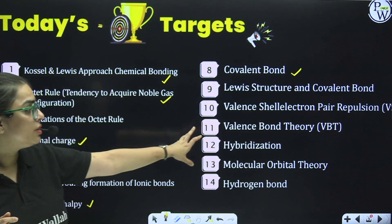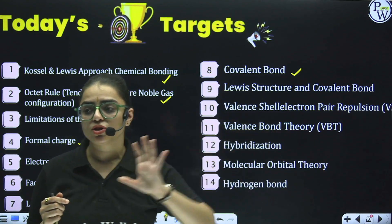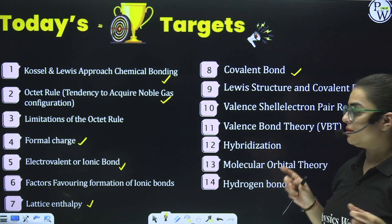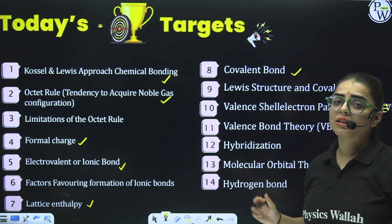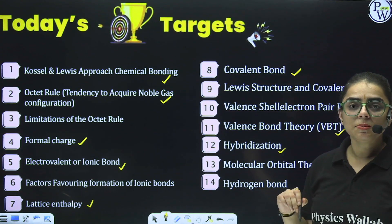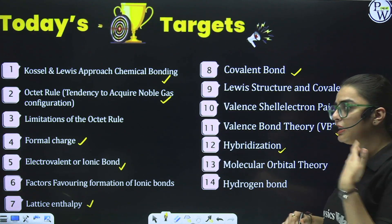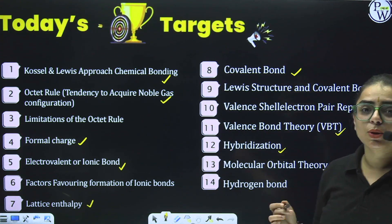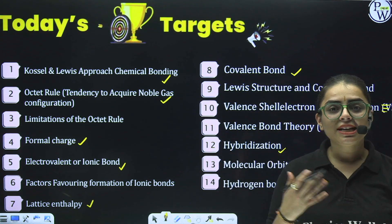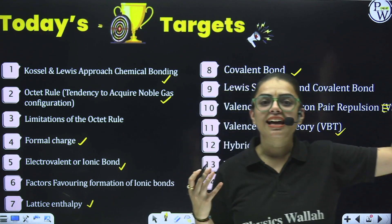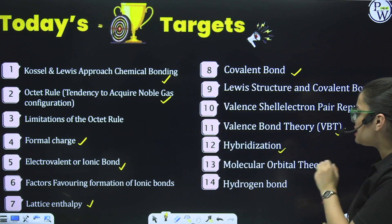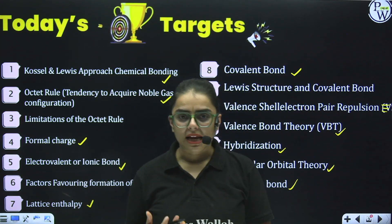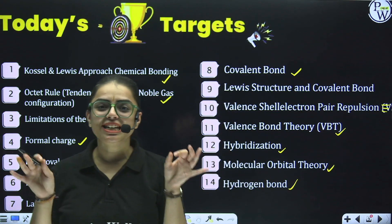In Octet Rule we will understand Lewis dot structure in depth, and we will look at the limitations of the Octet Rule, then proceed to Formal Charge. The next segment will be about Electrovalent or Ionic Bond, factors favouring its formation, and Fajans' rule — that means covalent character in ionic compounds. Then we will see Lattice Enthalpy, Covalent Bond, VSEPR theory, Valence Bond Theory, hybridization, Molecular Orbital Theory, Hydrogen Bond, and bond parameters.